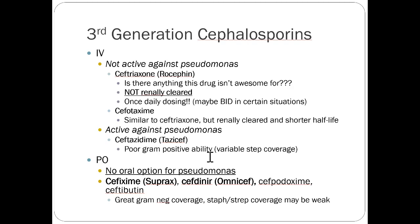Third-generation cephalosporins split into two groups: those without Pseudomonas activity and those with it. Ceftriaxone (Rocephin) is one of the most versatile antibiotics in our arsenal — it's recommended for skin and soft tissue infections, UTIs, GI surgery prophylaxis, intra-abdominal infections, meningitis, and more. The list of indications goes on.